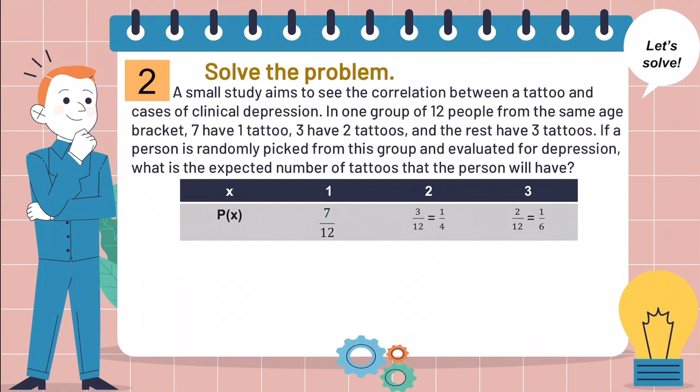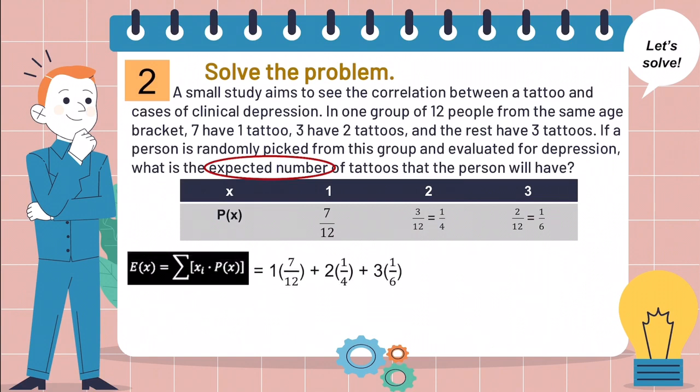Since we are finding the expected value, that means we are going to use this formula. That is, 1 times 7 over 12 plus 2 times 1 fourth plus 3 times 1 sixth. So, the answer is equal to 19 over 12, which is equivalent to 1.58.